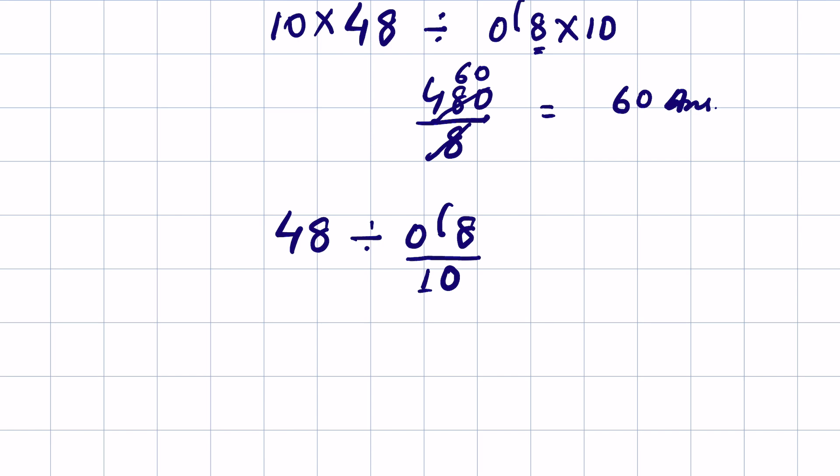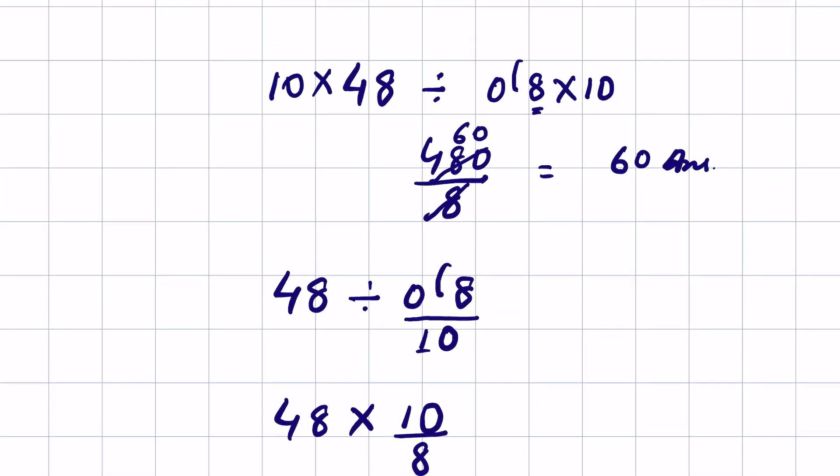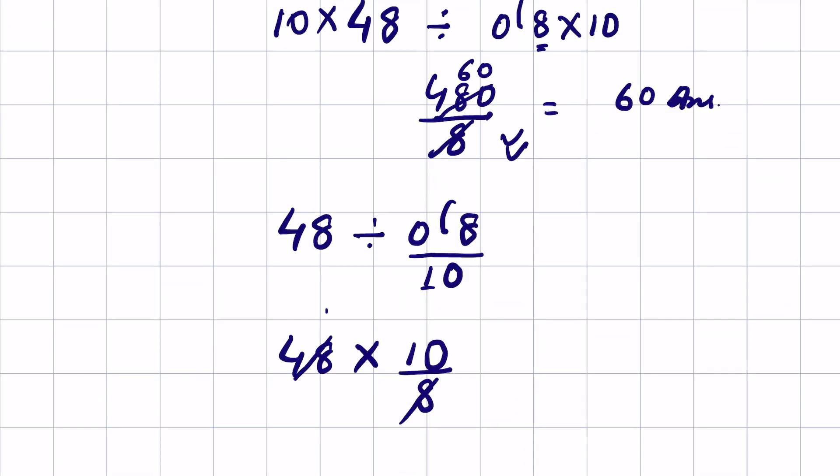So we convert division into multiplication and the number after that gets inverted. So 10 will go to the numerator and 8 will become denominator. You see the same result. Now 8 times 6 is 48 and 6 times 10 is 60. So whichever way you find easier, do it like that. Like and subscribe, thanks for watching.